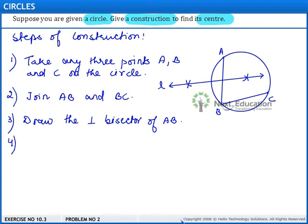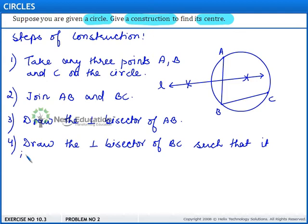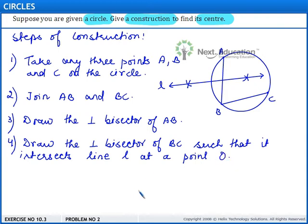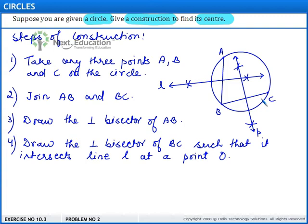The fourth step is: draw the perpendicular bisector of BC such that it intersects line L at a point O. The perpendicular bisector of BC intersects line L at point O. So O is the required center of the circle.